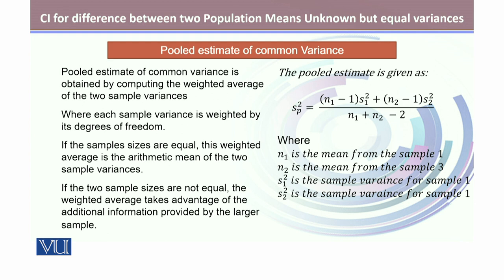If the two sample sizes are not equal, the weighted average takes advantage of the additional information provided by the larger sample. We get this pooled estimate as the weighted average and denote it by SP².